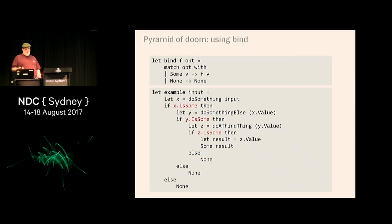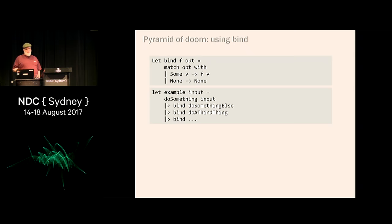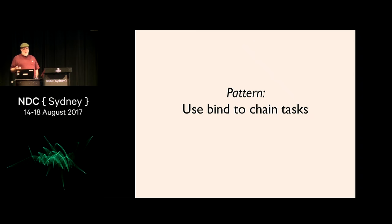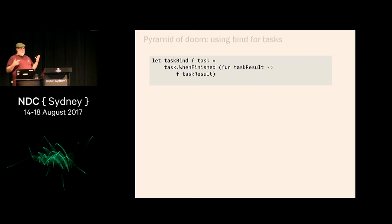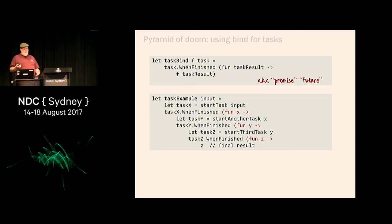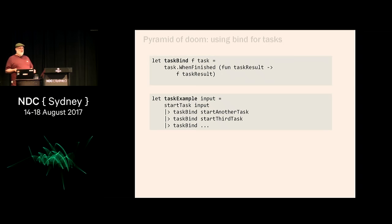For the option type, bind converts the triangular pyramid of doom into a nice flat thing. For the task analogy - waiting for something; if it completes go to the next task, if it doesn't bypass it - same model. We write a task bind: when this task is finished, what do you want me to do? This is also called a promise or future. When it's finished do this, when it's finished do this - using bind it looks flat, linear, easy to understand. You've hidden the complexity and can focus on what the steps are.